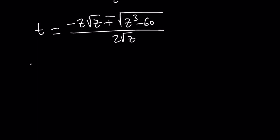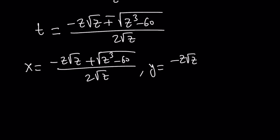So suppose x is negative z root z plus square root of z cubed minus 60, all over 2 times the square root of z. And y is negative z root z minus the square root of z cubed minus 60, all over 2 times the square root of z. Now, if x and y have these values, what is x cubed plus y cubed plus z cubed in this case? That's basically what we're trying to find.